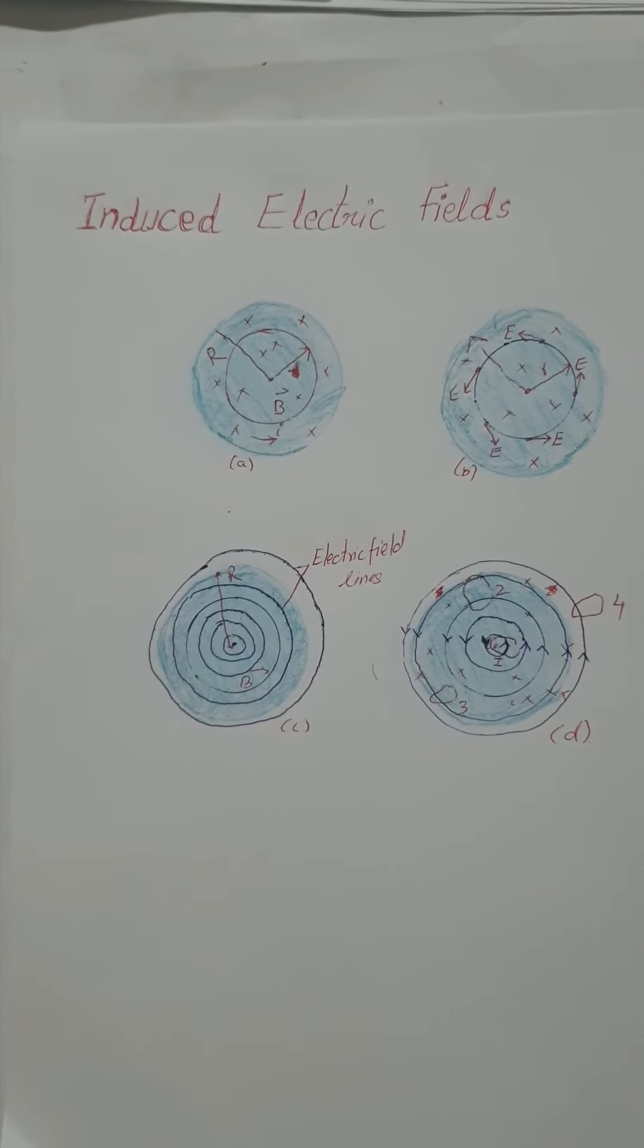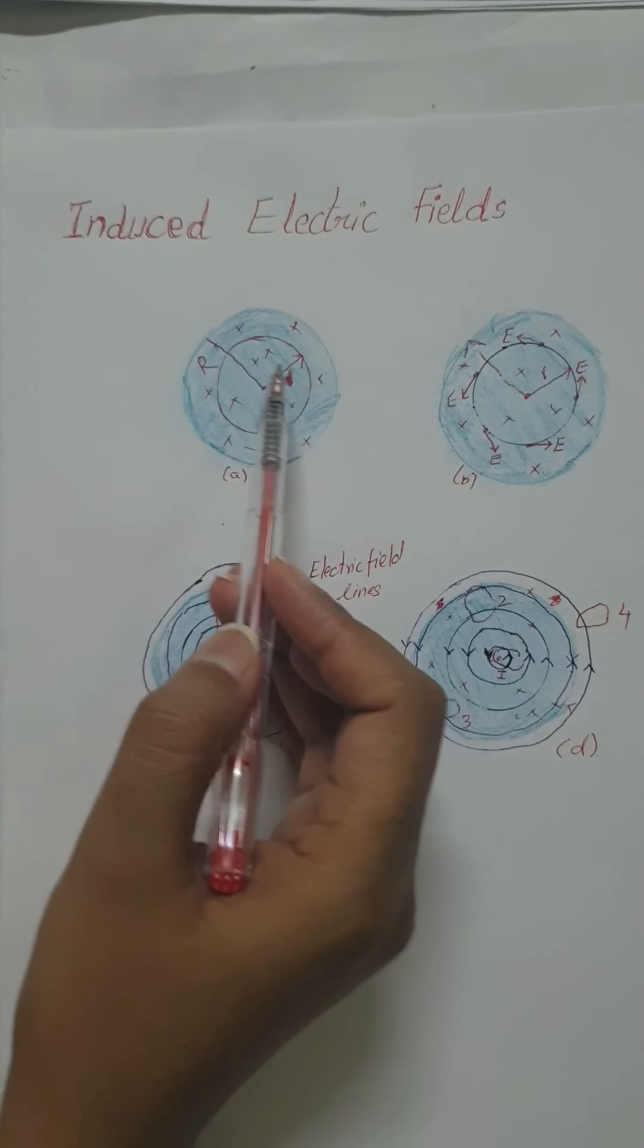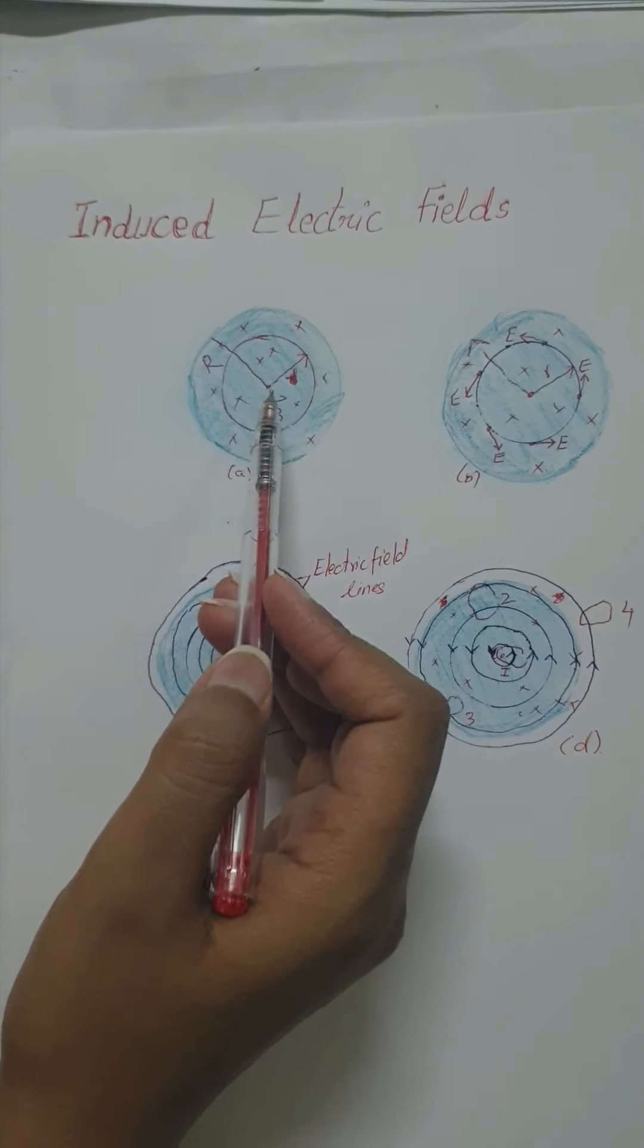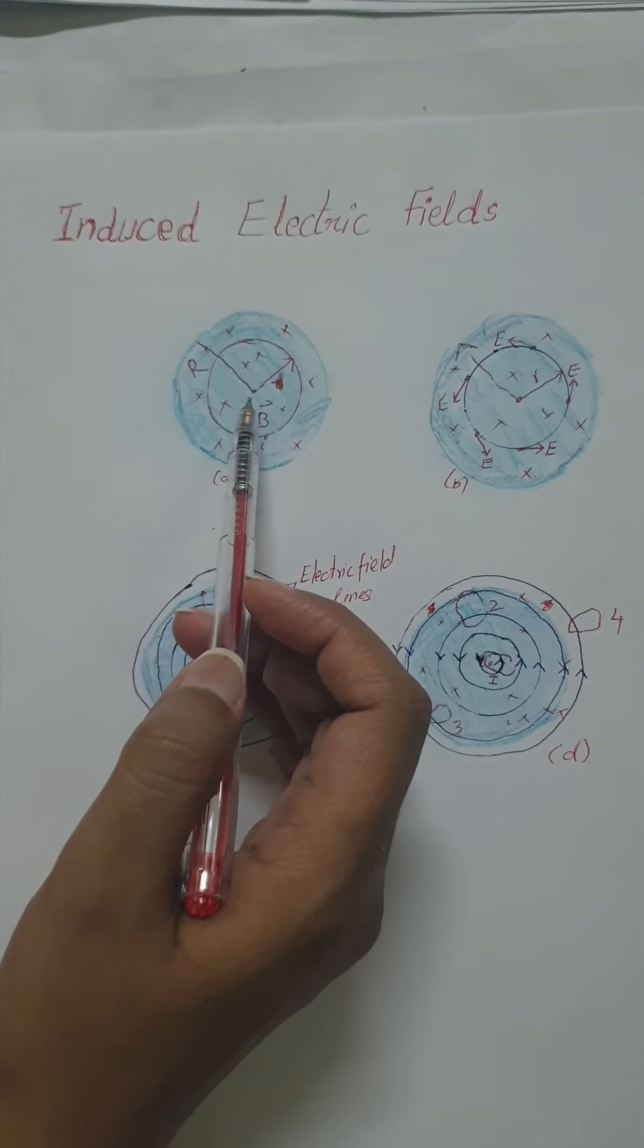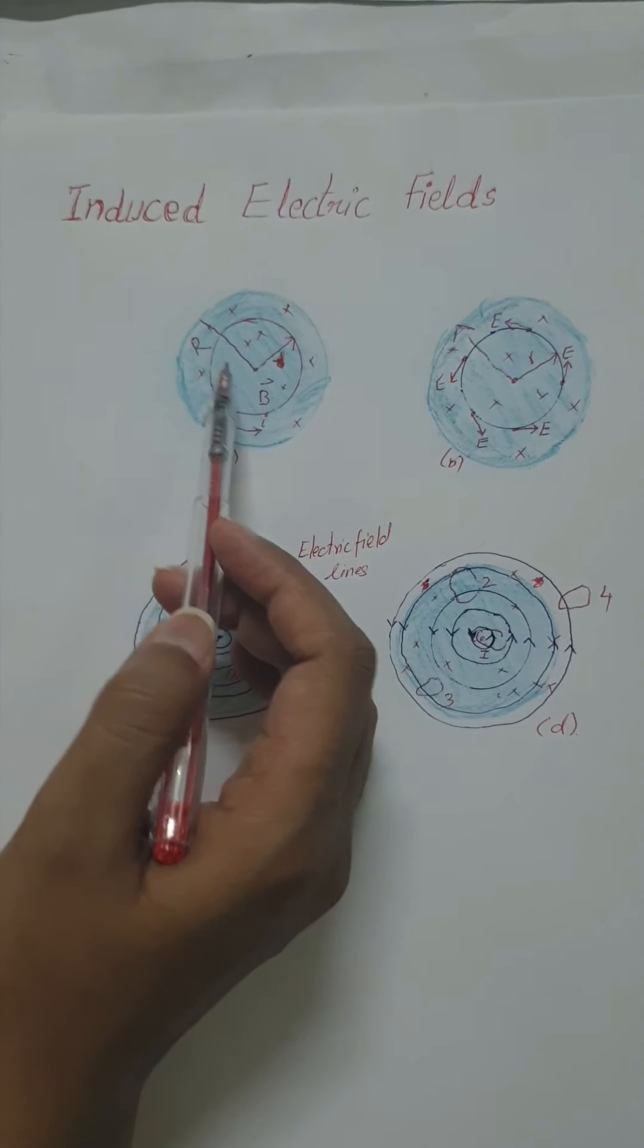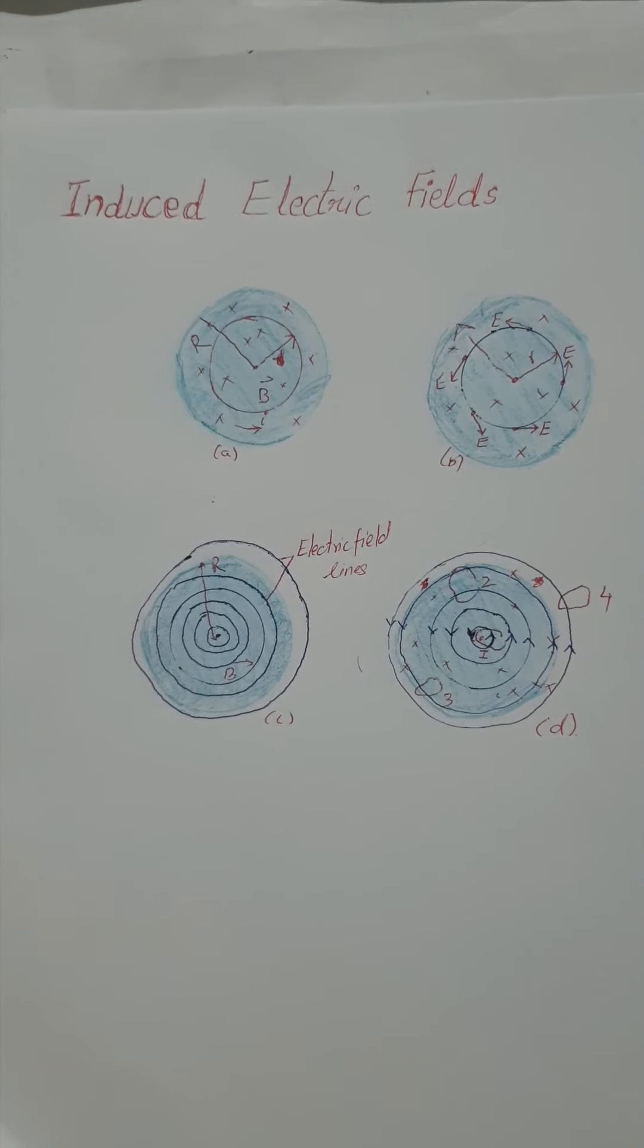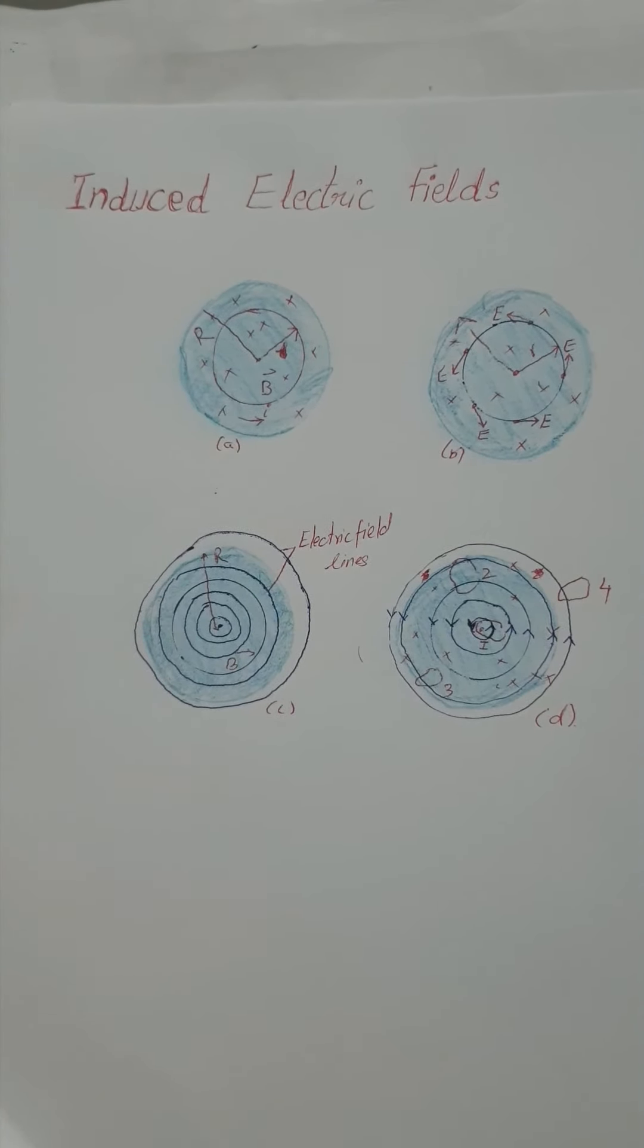Let's discuss the topic of induced electric field. Here we place a copper ring of radius R in a uniform external field which fills a cylindrical volume of radius R. Let's suppose that we increase the strength of this field by a steady rate.